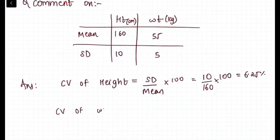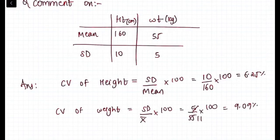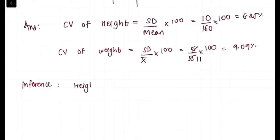Which comes out to be 10 upon 160 into 100, 6.25 percent, while coefficient of variation of weight is standard deviation upon mean into 100, 5 upon 55 into 100, 9.09 percent. So what is the inference? Height is more consistent than weight.